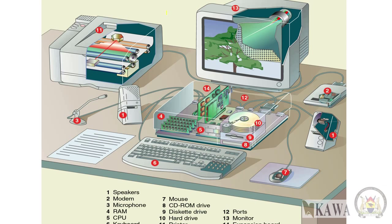We have the first hardware: the speaker. We have the second device, which is the modem — the modem that provides us with internet. We have the third one, which is the microphone. We have the fourth one, which is the RAM or the memory. We have the fifth one, which is the processor or the CPU — central processing unit. We have the sixth one, which is the keyboard, which we are going to be using to enter all our data.